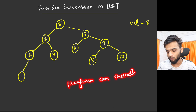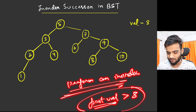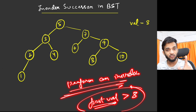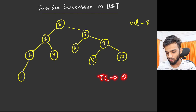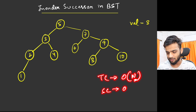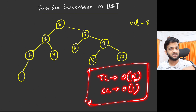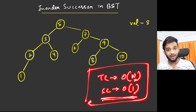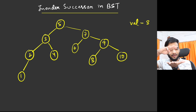Yes, we can perform an in-order traversal, and while performing it, the first value we encounter that is greater than 8 is our answer — we stop there. The time complexity is O(n) since we do an in-order traversal, and the space complexity is O(1) if we don't count recursion stack space, for example using a Morris traversal. But there's still a problem — we're using O(n) time.